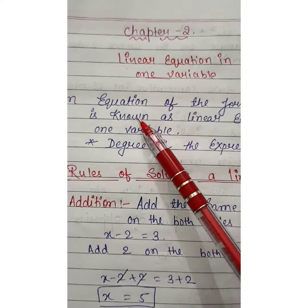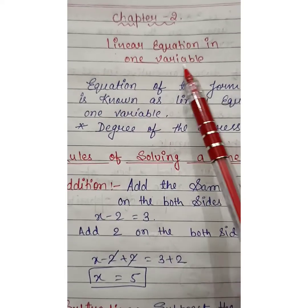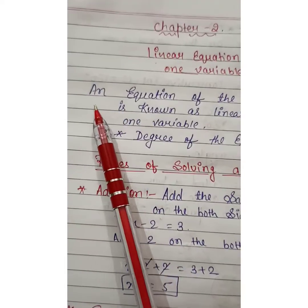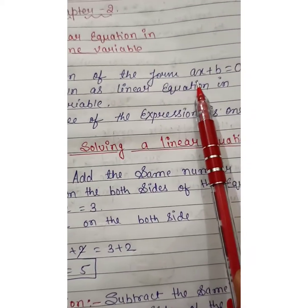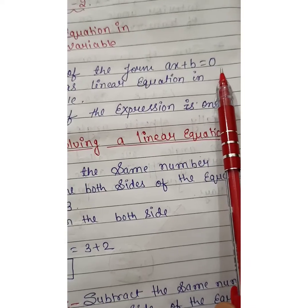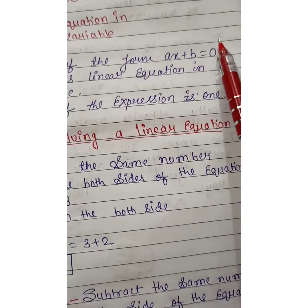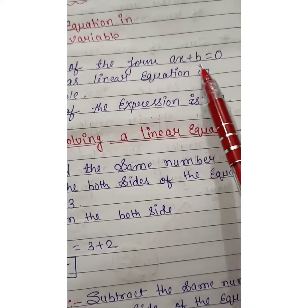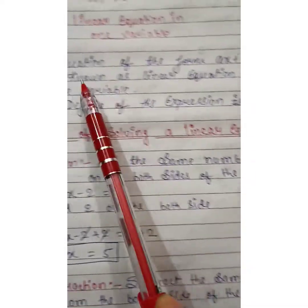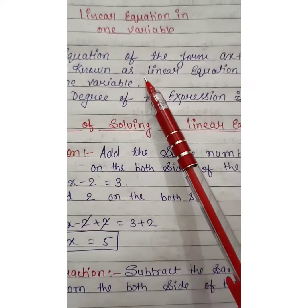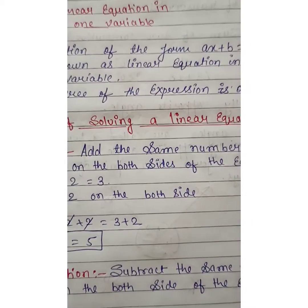First of all we will understand what is a linear equation in one variable. Here I have written an equation of the form Ax plus By equal to 0. Any equation in the form Ax plus By is known as a linear equation in one variable.